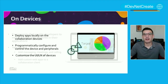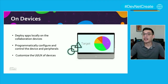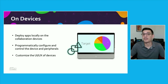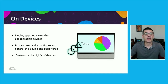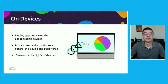The last type of application I'll highlight gets deployed right on a collaboration device, like a video conferencing unit. These kinds of apps may not even need to be hosted anywhere else because they're installed on the device itself and leverage their onboard APIs. We've seen a lot of apps on devices that customize meeting experiences.